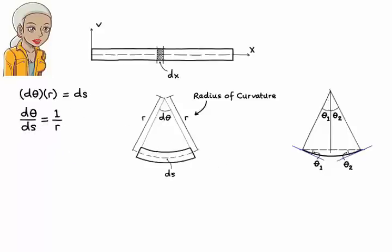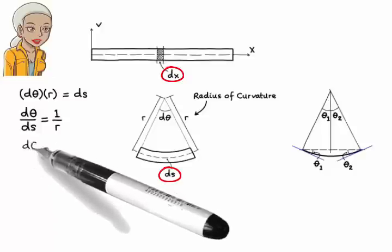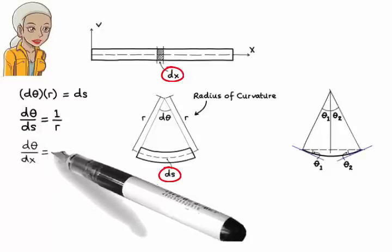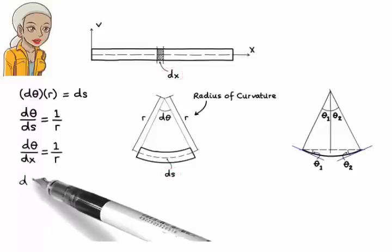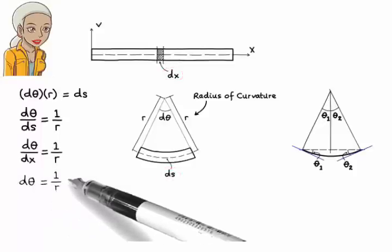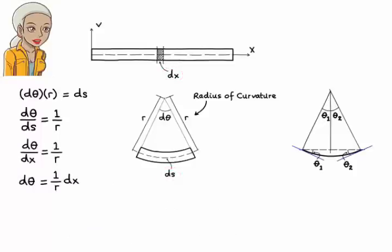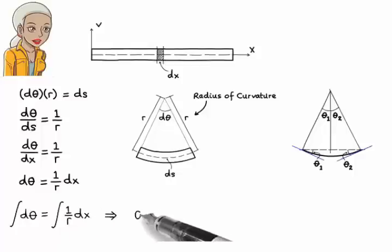Also, let's make another simplification. Since ds is the unchanged length of the segment along the neutral axis, we can replace it with dx. So, we can write dθ/dx equals 1 over r or dθ equals 1 over r dx. Integrating both sides of the equation, we get θ equals integral of 1 over r dx.